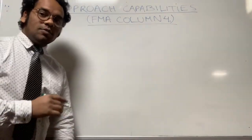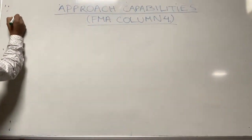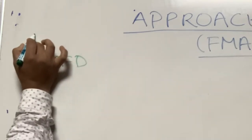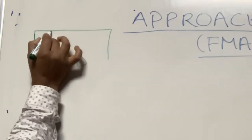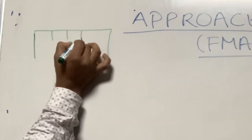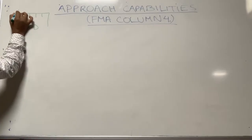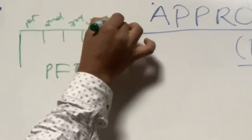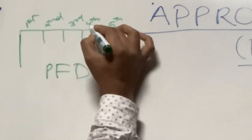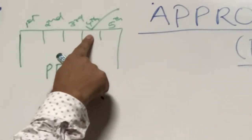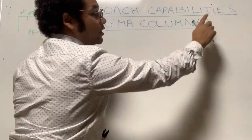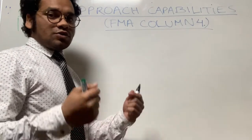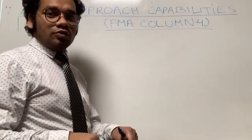Let me remind you what is PFD column 4. In my previous session I discussed that on the PFD — that is the Primary Flight Display on the main instrument panel — there are five columns: first, second, third, fourth, and fifth. Today we are going to discuss only about column number four, which is for approach capabilities. I'll share the link of the previous session in the description below.